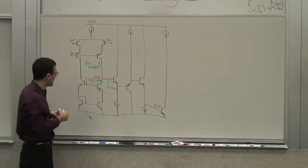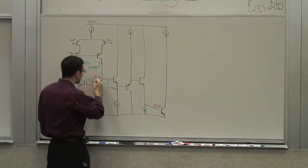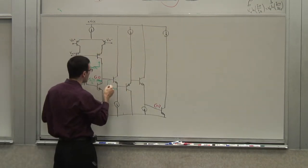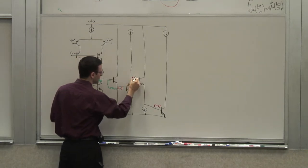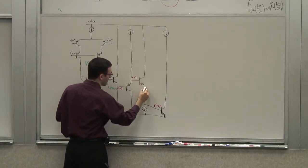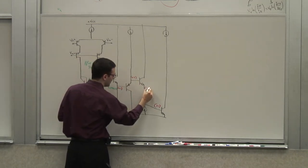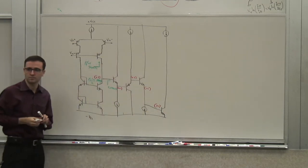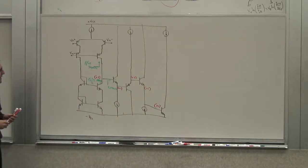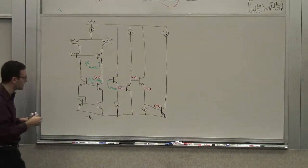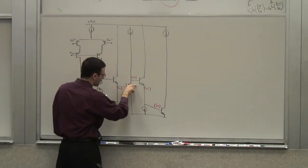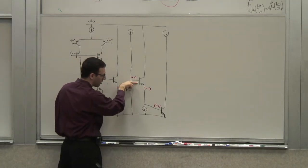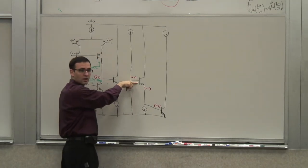Let's see if this works out. This is plus 2, this is plus 1, this is plus 2, this is plus 1, and this is plus 1. Okay. Now how about the impedance I see? Well, now I know this is going to be 250 kilo ohms — because this is 2.5 kilo ohms times beta is 250 kilo ohms.